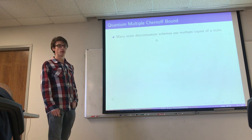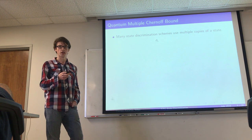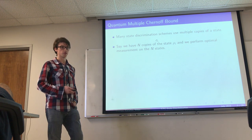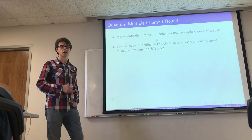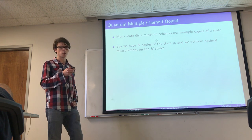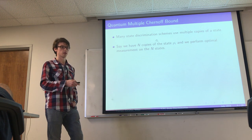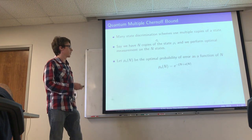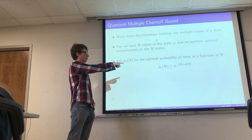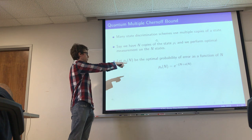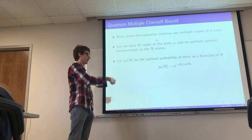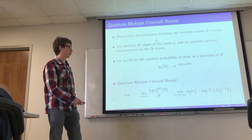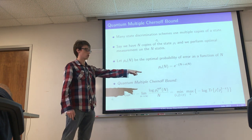Many state discrimination schemes rely on using multiple copies of the input state, which will in general enhance the probability of success. With n copies, the best possible measurement Bob can perform is the collective measurement — simultaneously measuring all n states at the same time. The optimal probability of error decreases exponentially with the number of copies, quantified by the error exponent ψ. The quantum Chernoff bound gives an analytical form to that error exponent ψ in terms of the input states, which is useful for studying the circuit.